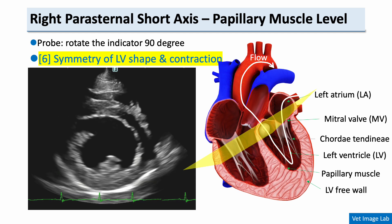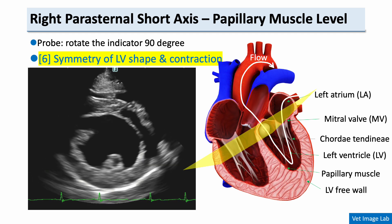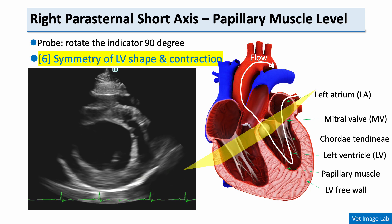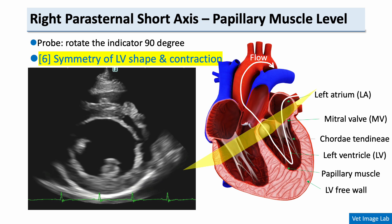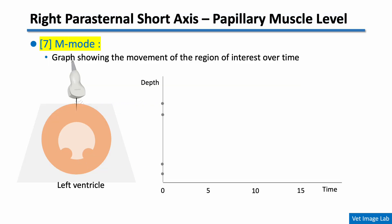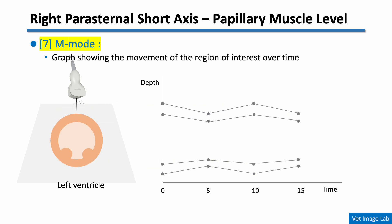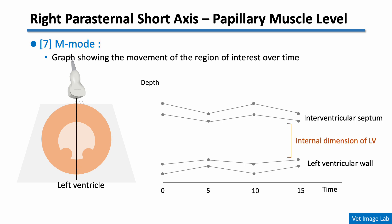Now let's rotate the probe 90 degrees from the long axis view. This gives us the right parasternal short axis view at the level of the papillary muscles. You can see the left ventricle in a circular cross section surrounded by the free wall and the interventricular septum. Here, we assess the symmetry of the left ventricle, both in shape and contraction — the left ventricular wall should contract evenly, maintaining a round shape throughout systole. In this view, performing M-mode is important. When you place an M-mode line across the left ventricle, the ultrasound captures the motion of that line over time and shows how the left ventricle moves throughout the cardiac cycle. The upper line represents the interventricular septum, the lower line corresponds to the left ventricular free wall, and the distance between them indicates the internal dimension of the LV.